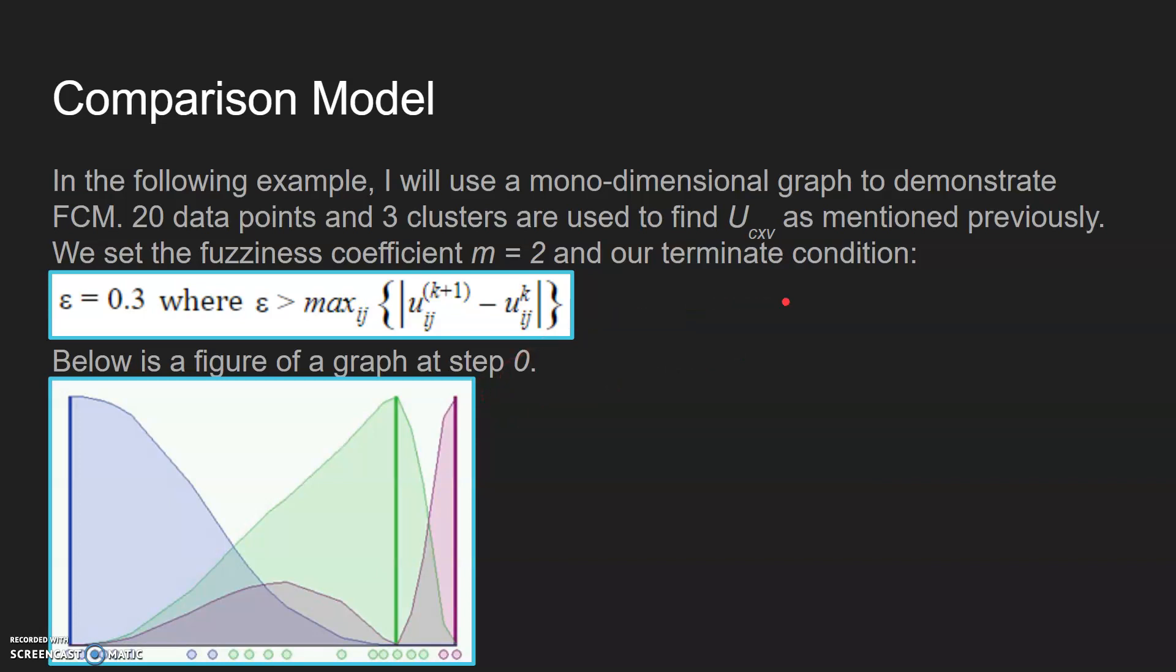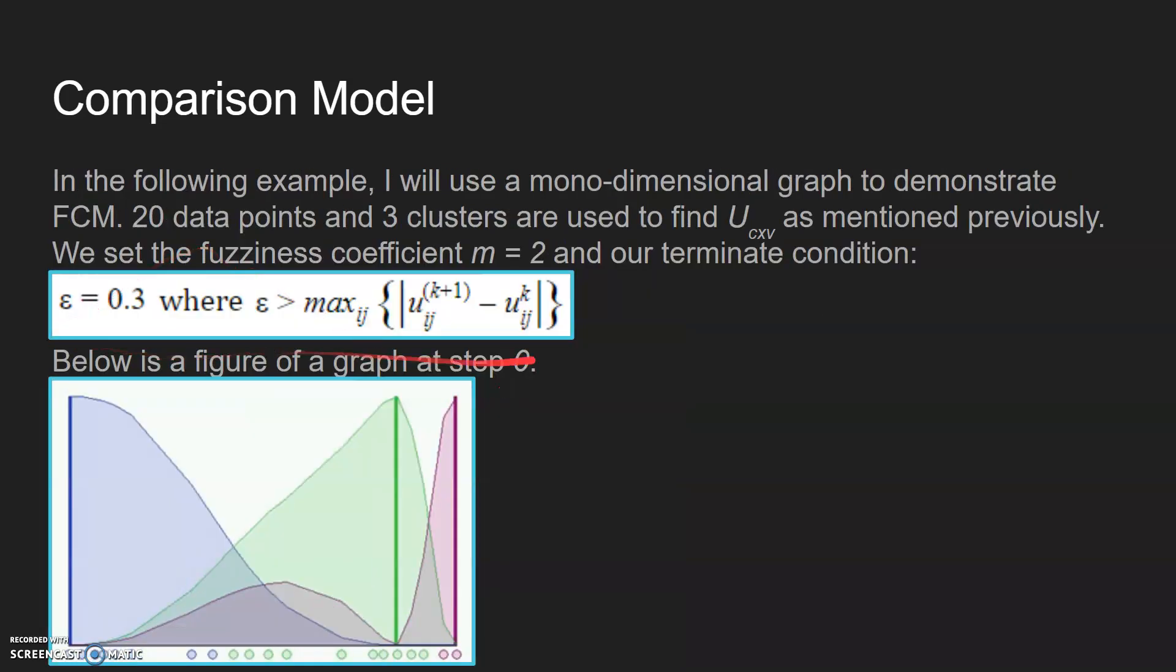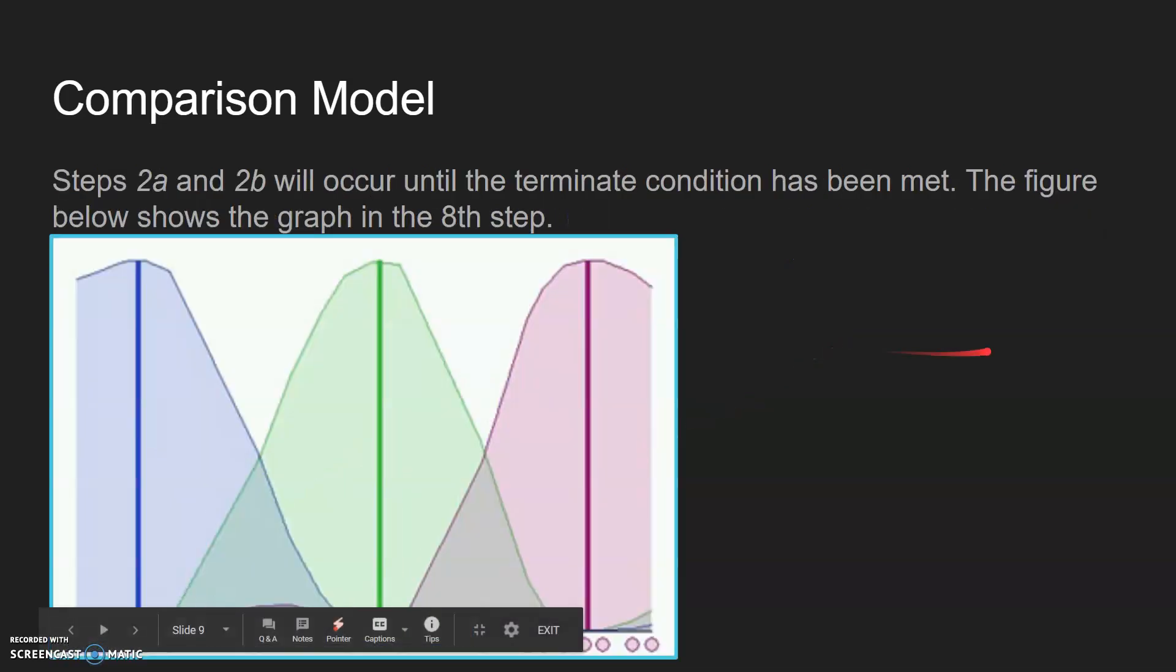This is basically our termination condition. This has to equal 0.3 for it to stop. That's a certain threshold. Here's step zero.